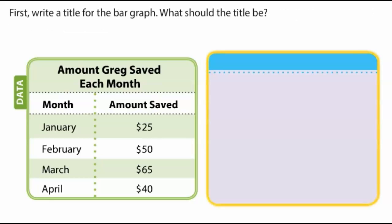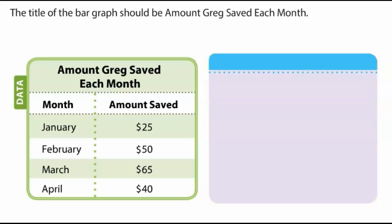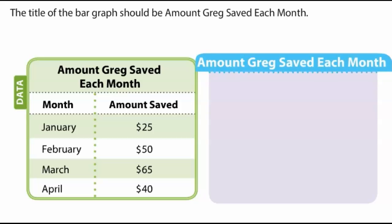First, write a title for the bar graph. What should the title be? The title of the bar graph should be Amount Greg Saved Each Month.